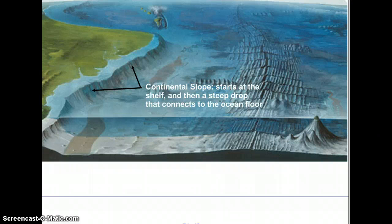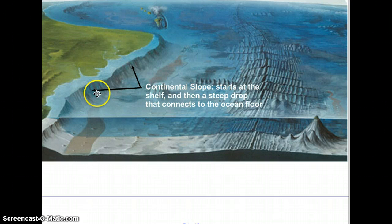The continental slope starts at the shelf and then a steep drop connects to the ocean floor. Label this on your diagram and write down the definition of the continental slope. Pause the movie and start it again when you are ready.